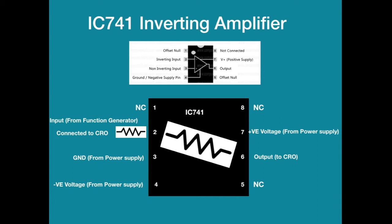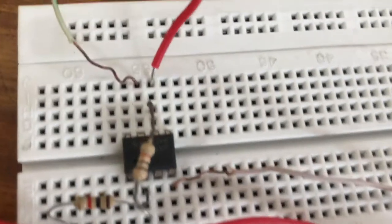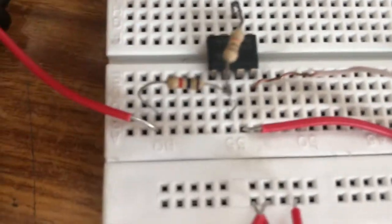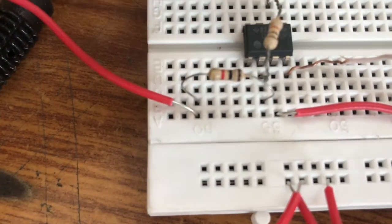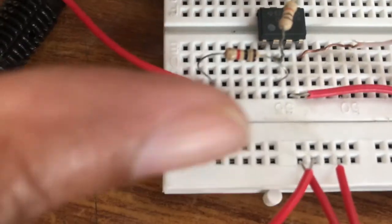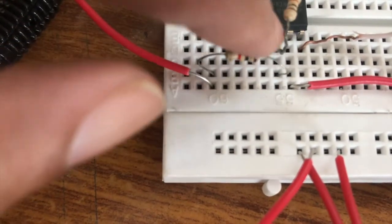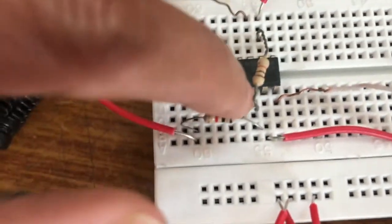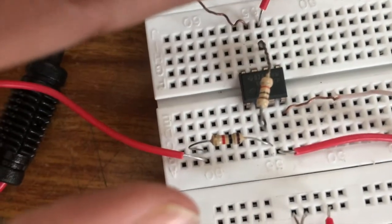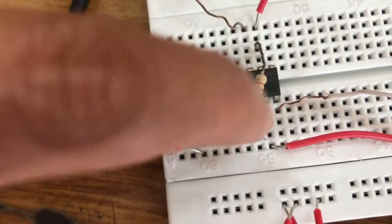Now we will see how it works practically. So this is the circuit mounted on the breadboard for inverting amplifier. You can observe two resistances R1 and RF. The input is given to the other end of the R1 and it is connected to pin number two and the feedback resistance is connected between pin number two and pin number six.